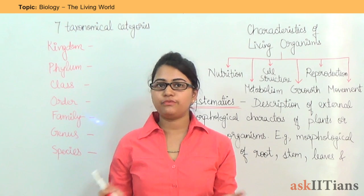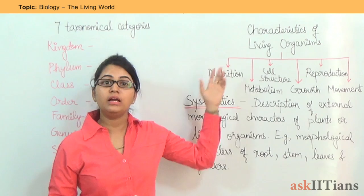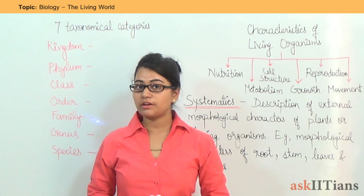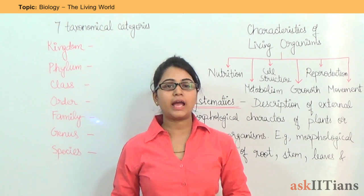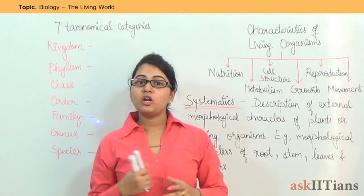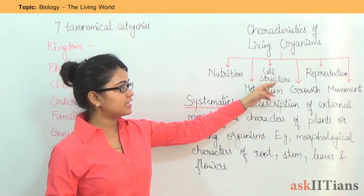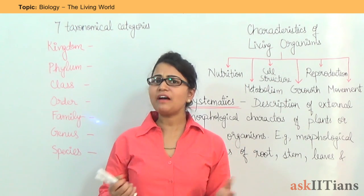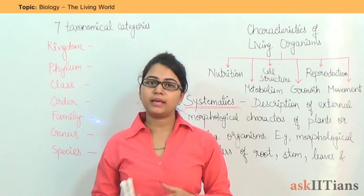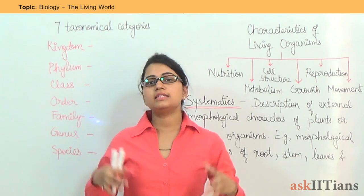Living organisms possess a few basic characteristics. The first one is nutrition. Each and every living organism takes food; the intake of food is called nutrition. In order to survive, each and every living organism has to take some food. Next comes metabolism, which is the defining characteristic of living organisms. Next is cell structure — we have studied since our foundation classes that the body of an organism is made up of cells, so each and every living organism has a cell structure.